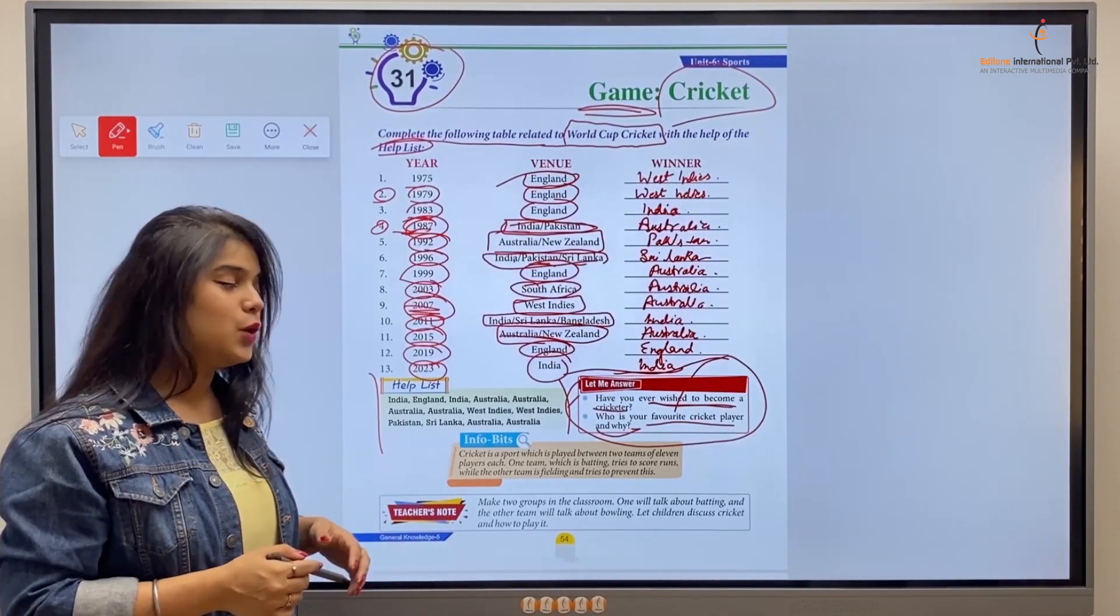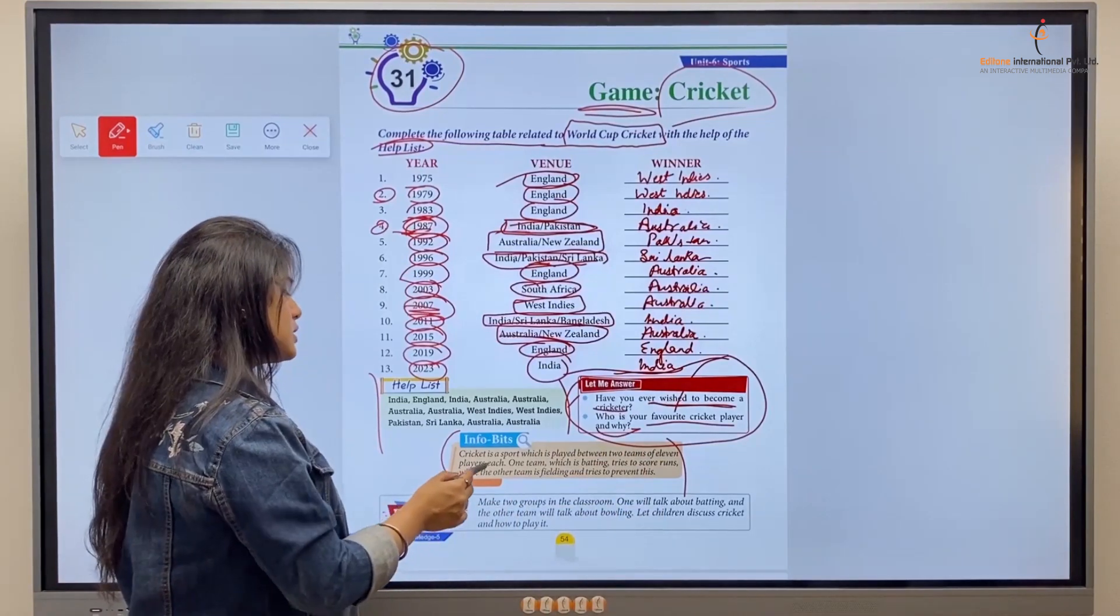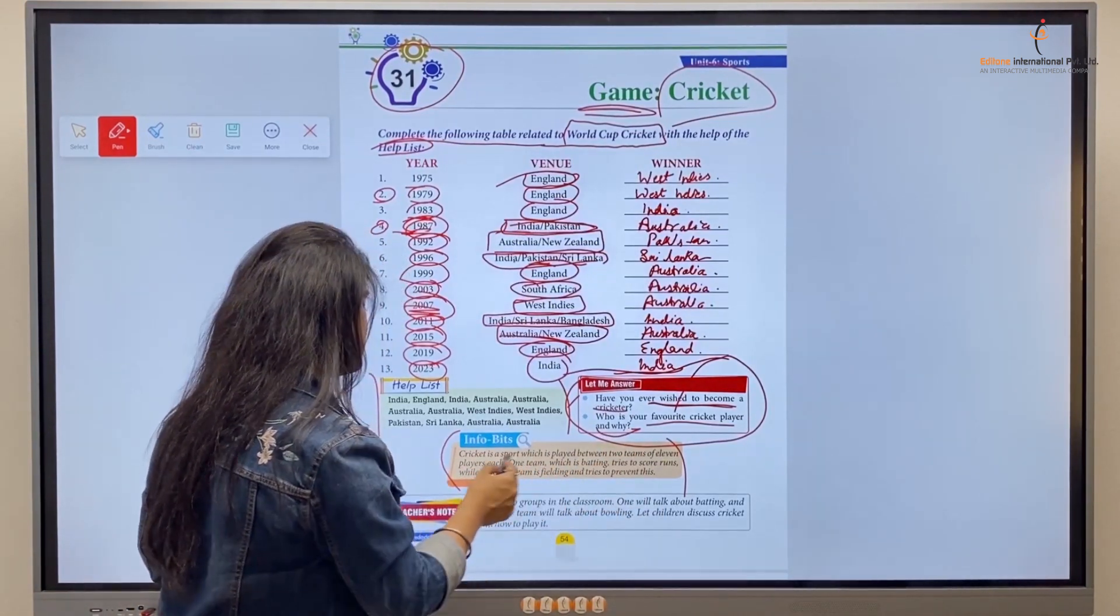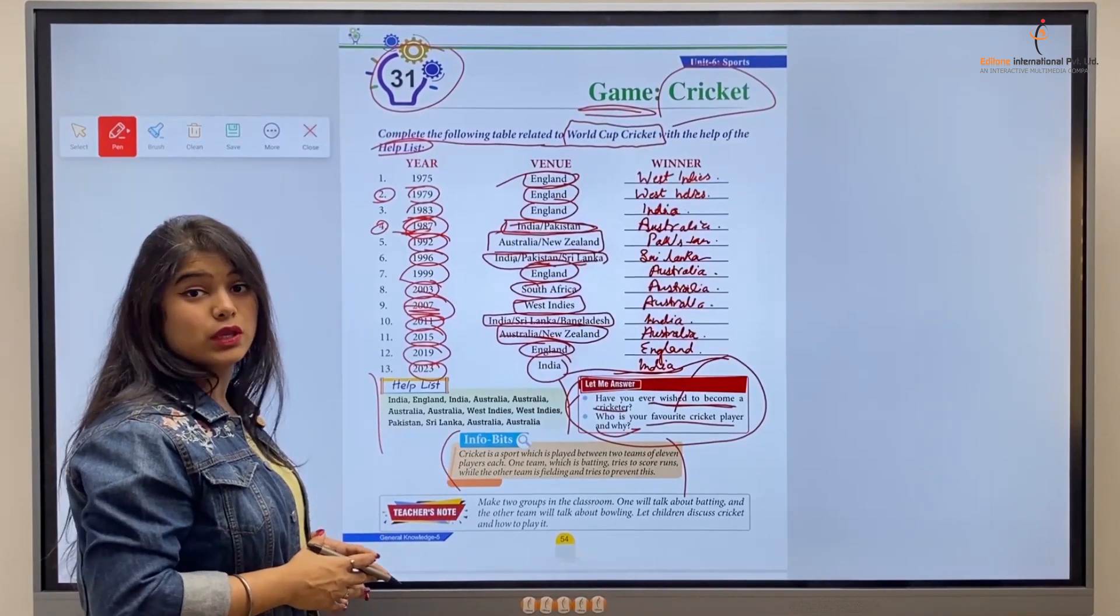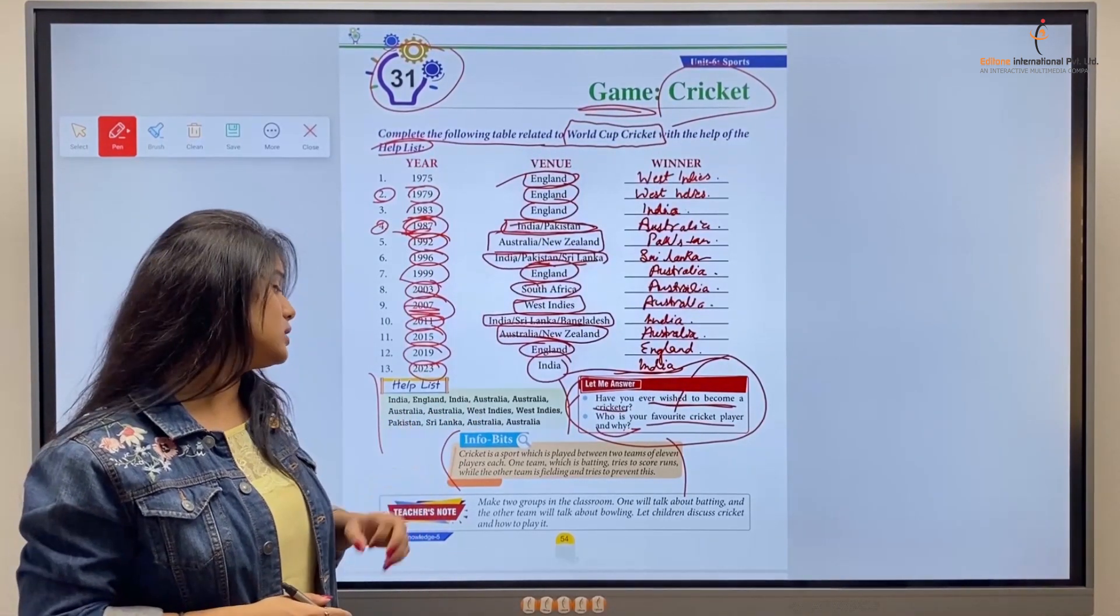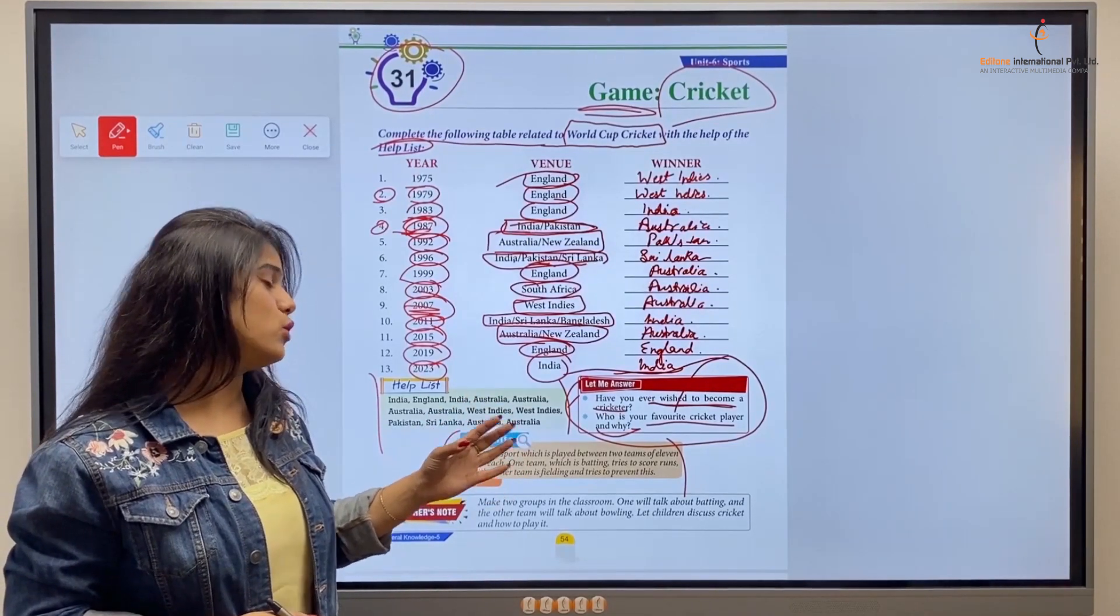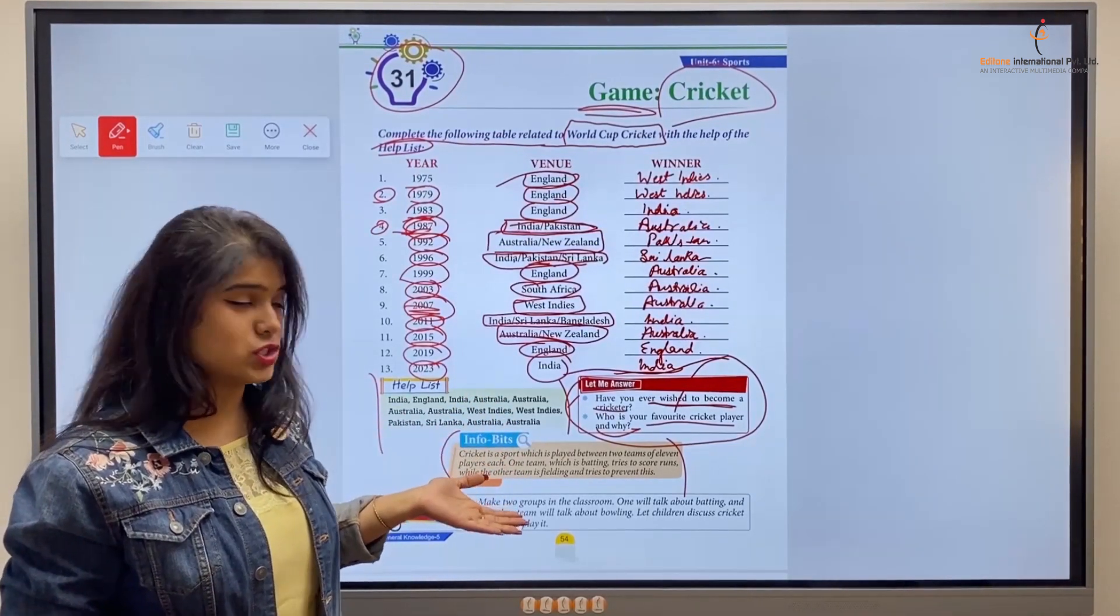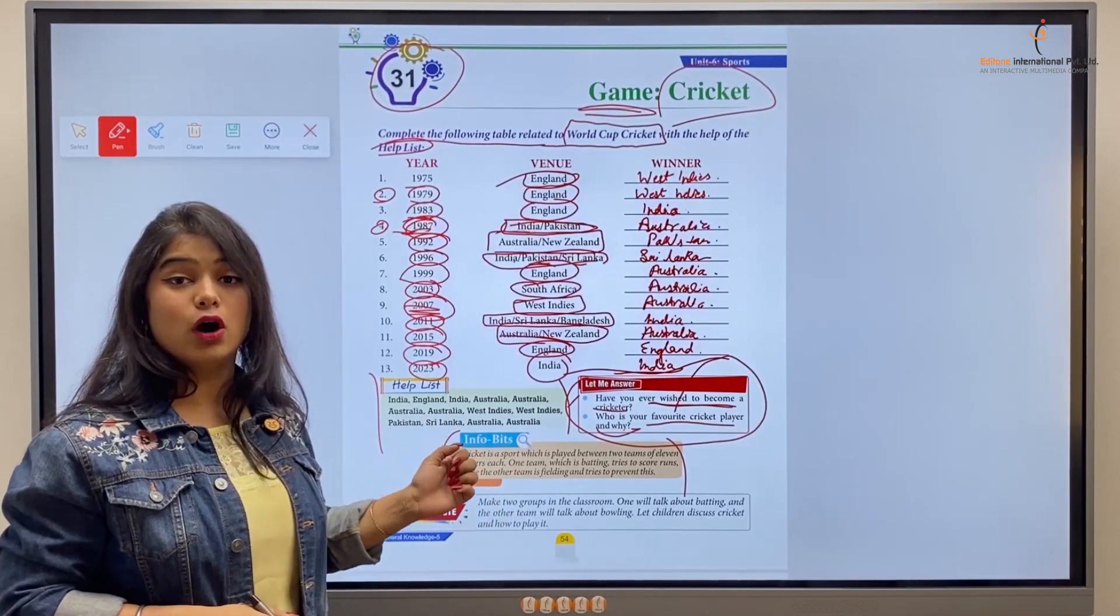Now let's read the Infobits. Cricket is a sport which is played between two teams of eleven players each. So cricket is a game played between two teams, and each team has eleven players. One team which is batting tries to make the most runs, and the other team is fielding and tries to prevent them from making runs, right kids?